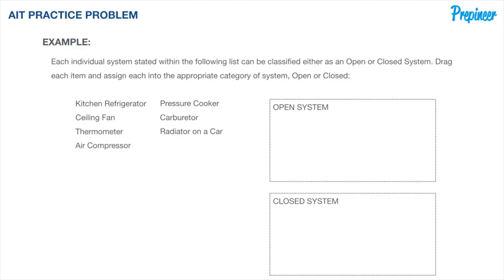The seven systems are: our kitchen refrigerator, our ceiling fan, a thermometer, an air compressor, a pressure cooker, a carburetor, and a radiator on a car.